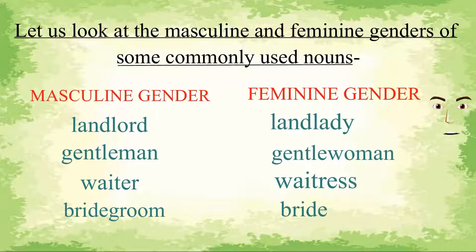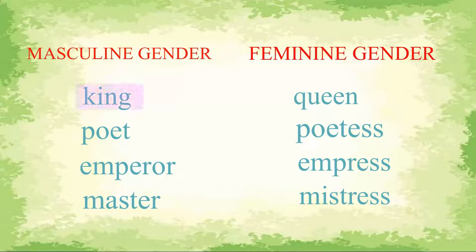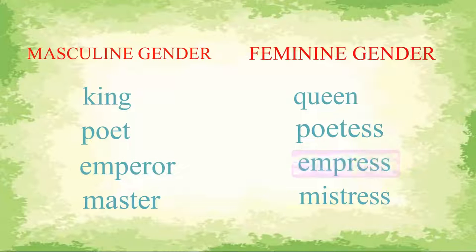Let us look at the masculine and feminine gender of some commonly used nouns. Please repeat after me. Landlord — landlady. Gentleman — gentlewoman. Waiter — waitress. Bridegroom — bride. King — queen. Poet — poetess. Emperor — empress. Master — mistress.